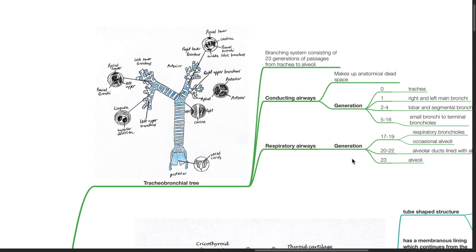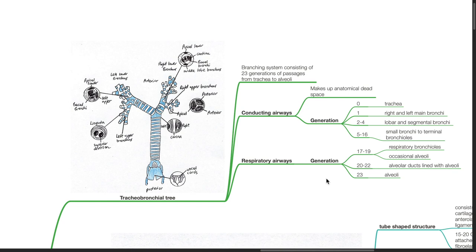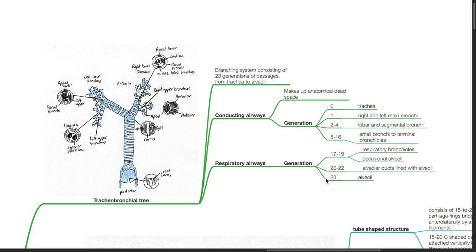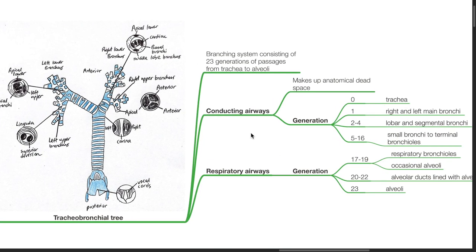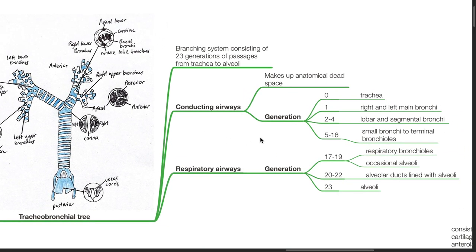The tracheobronchial tree is a branching system consisting of 23 generations of passages from the trachea to the alveoli. It can be divided into the conducting airways and the respiratory airways. The conducting airways make up anatomical dead space.